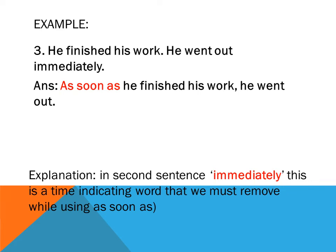Third example: 'He finished his work. He went out immediately.' Here, 'immediately' is a time-indicating word, so we must remove it. Remember, 'as soon as' always comes at the beginning of the first action. The answer is: 'As soon as he finished his work, he went out.'